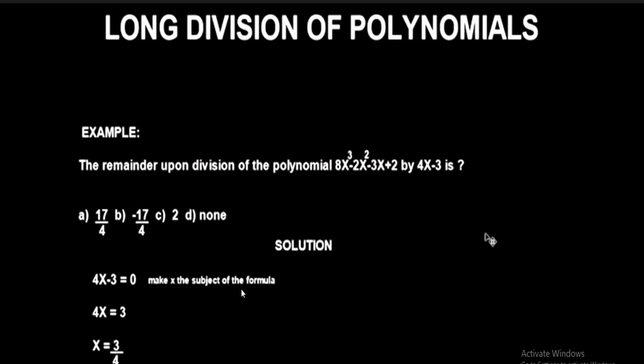For you to begin to solve this with the calculator, this divisor that is dividing the dividend, you have to equate it to zero. So when you equate this to zero, you then make x the subject of the formula. When you make x subject of the formula, you're going to have this: negative 3 goes over the equality sign and changes to positive 3. Then divide both sides by 4 to make x subject of the formula. So x will be 3 over 4.